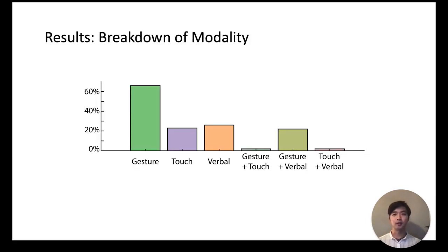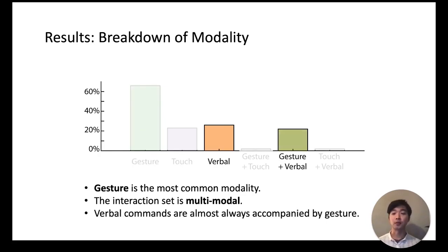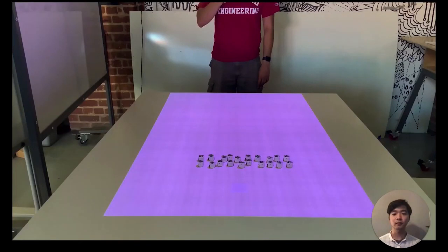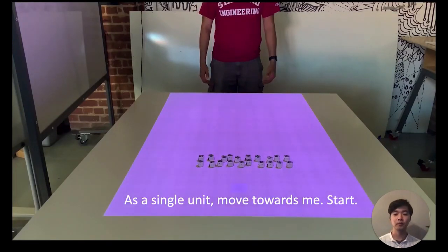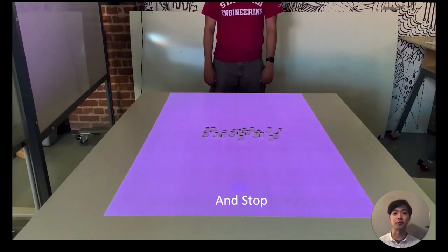Here's the breakdown of modality across all the user-generated interactions. We found that gesture is the most common modality and that supports prior work that have mostly leveraged gesture for multi-robot system control. However, the interaction set is still multimodal and a significant portion still uses touch or verbal communication. One interesting trend is that verbal commands were almost always accompanied by gesture, so even for participants whose primary modality was verbal, they still subconsciously used gesture on their side to complement their verbal command.